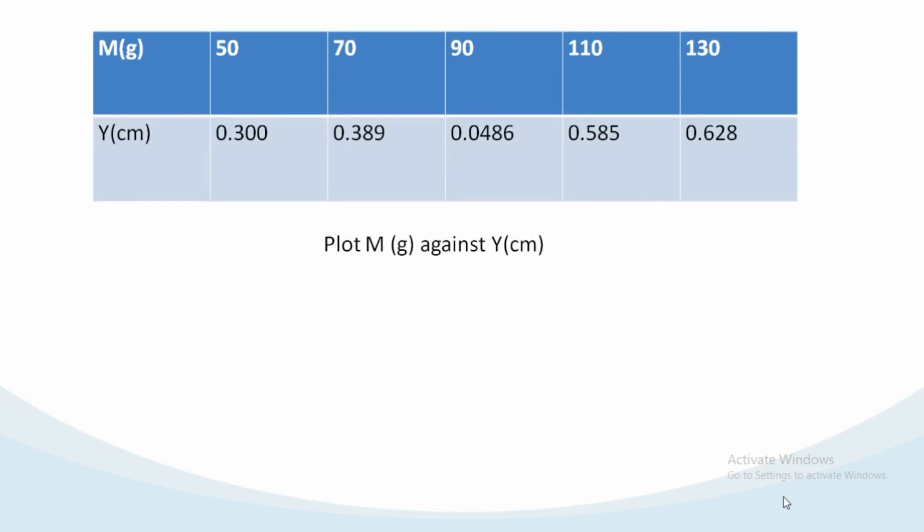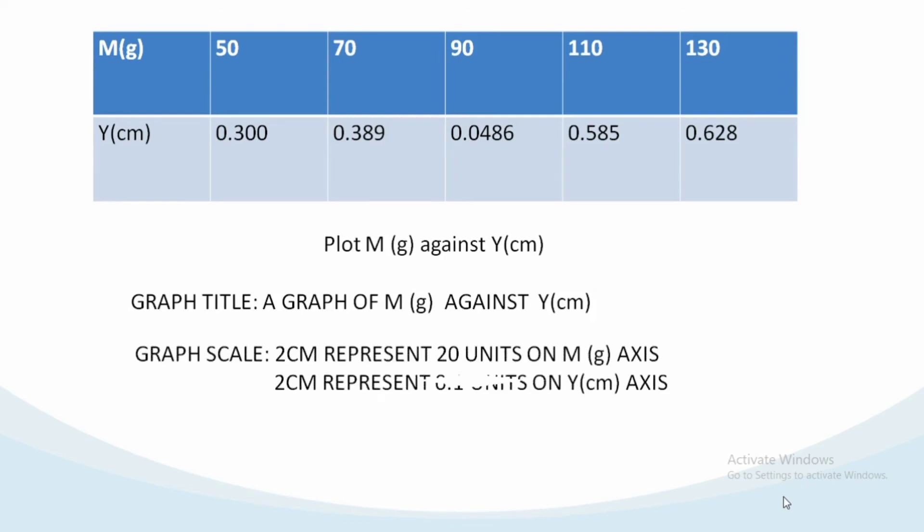Let's look at the third table. We are having a table of mass against distance Y in centimeters. We have 50, 70, 90, 110, 130, and for the Y values it's 0.300, 0.389 and so on. The graph title is a graph of M in gram against Y in centimeter. The scale is 2cm represent 20 units on M(g) axis and 2cm to represent 0.1 units on Y(cm) axis. The scale given is going accordingly with the table.